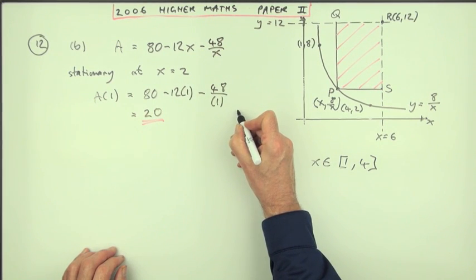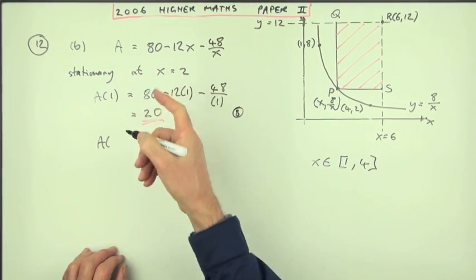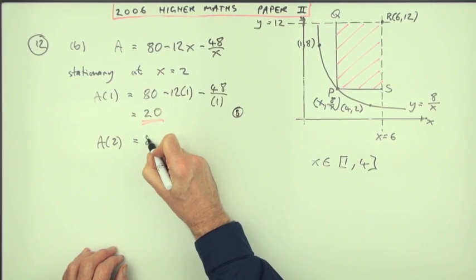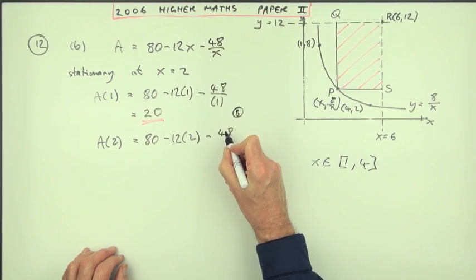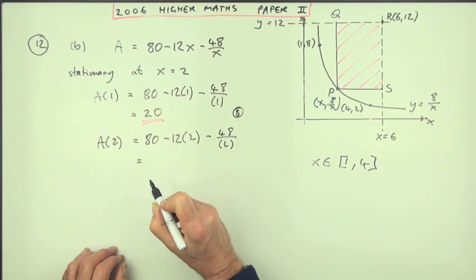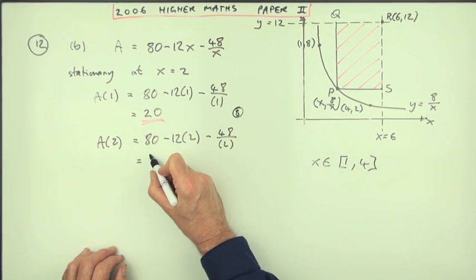Work out the area at 2. Well, that'll be 80 minus 12 times 2 minus 48 over the 2, and that'll be minus 24 minus another 24, so that's minus 48, 32. That's a mark, that's mark number 9.